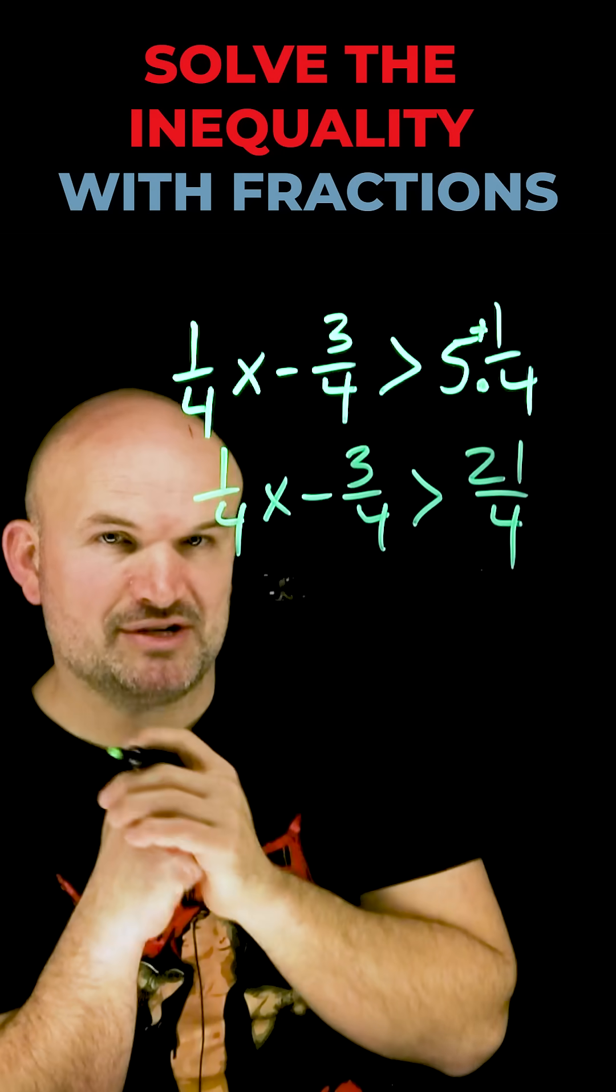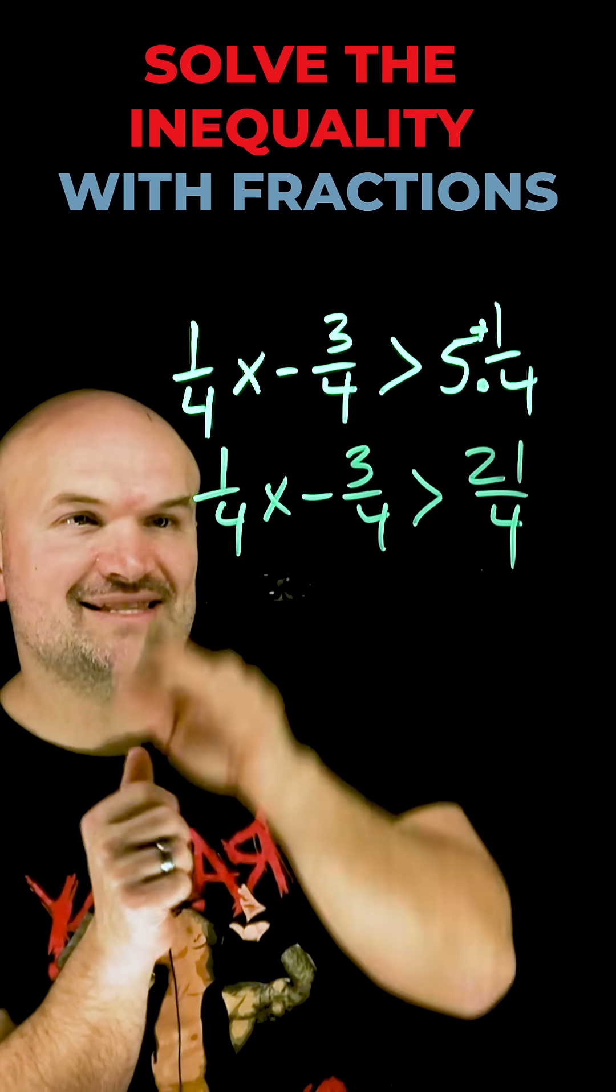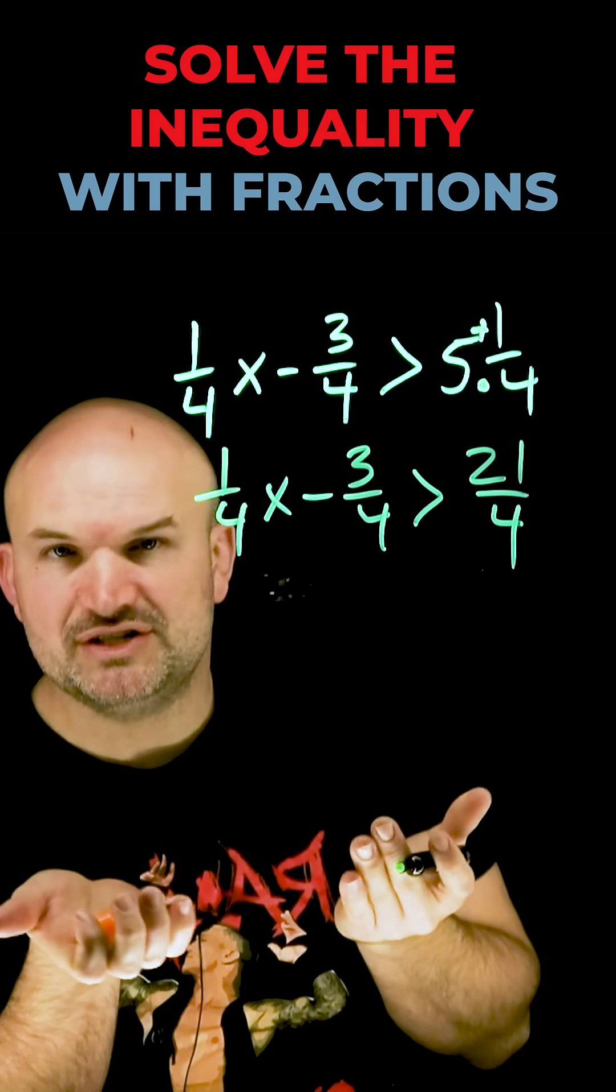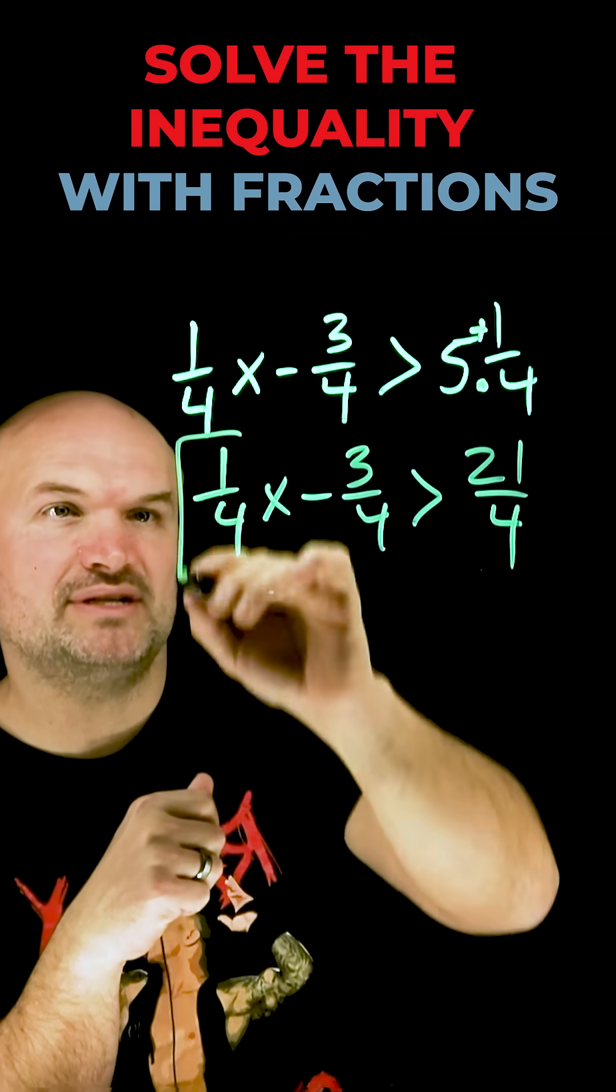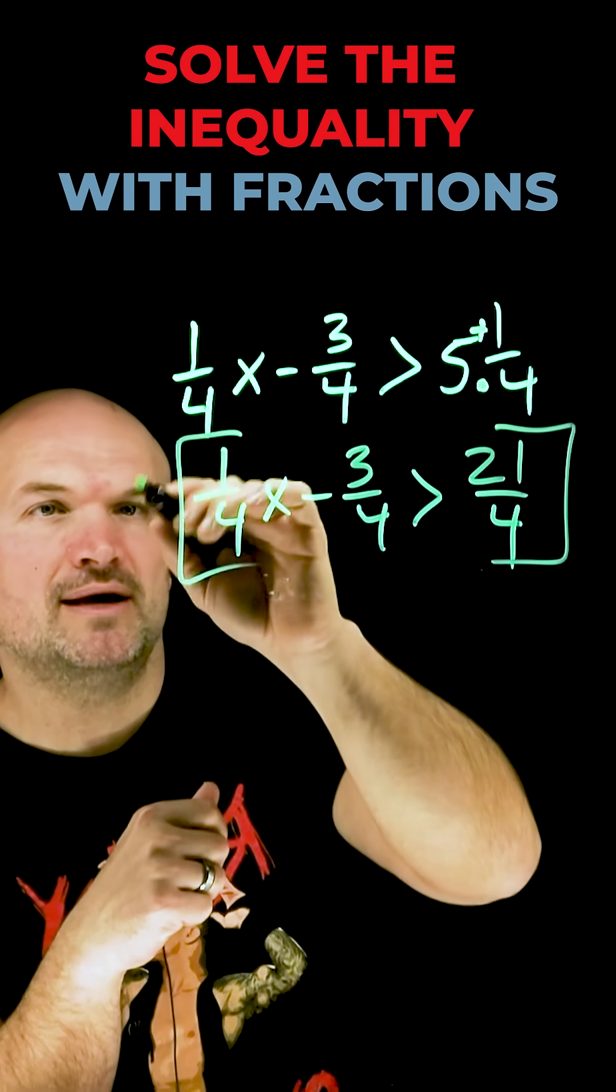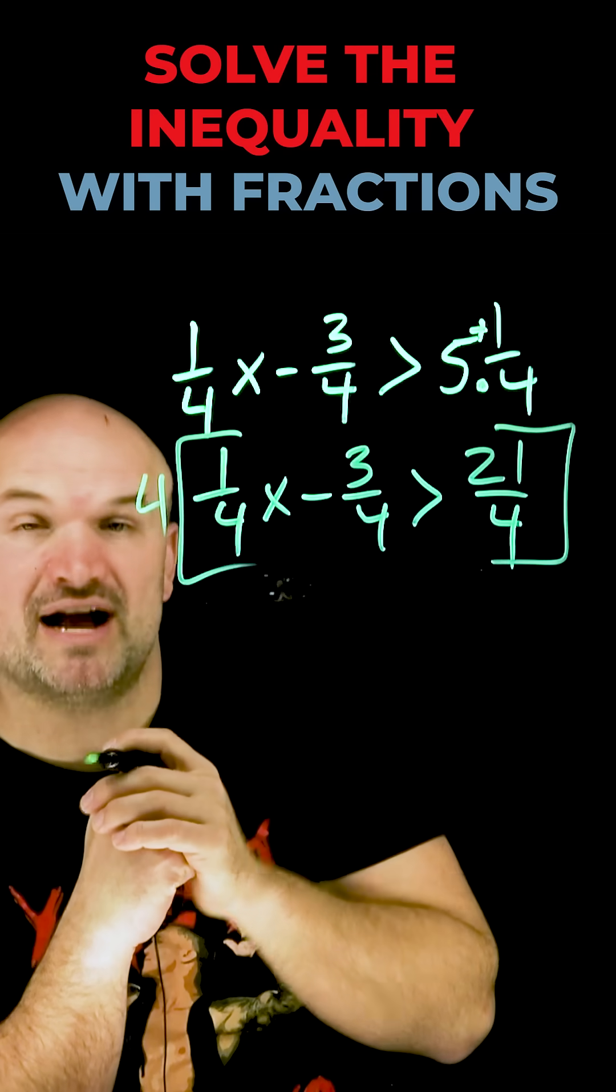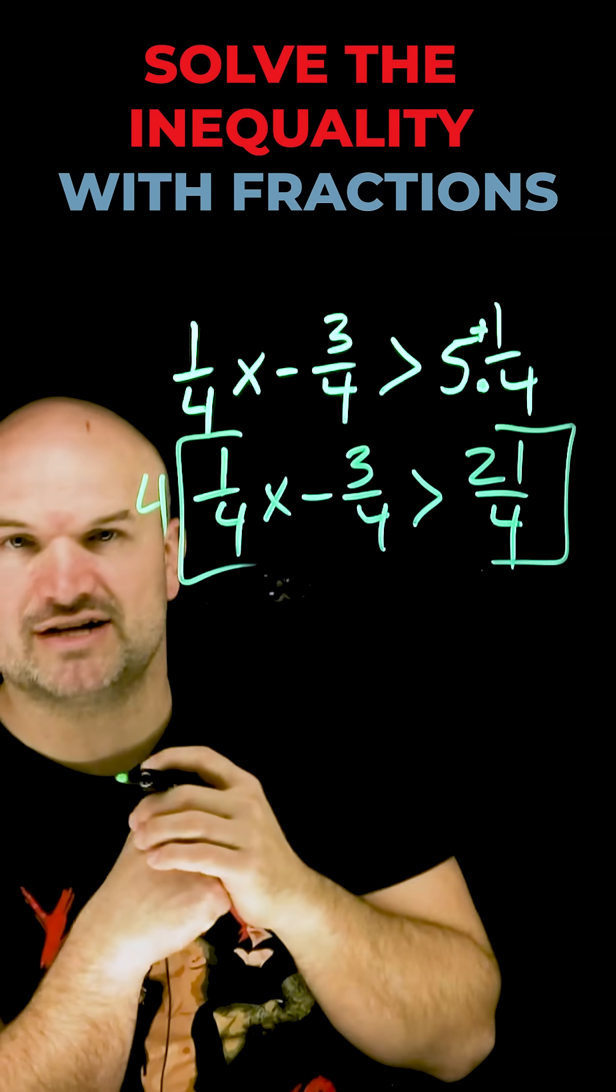Now you can see I have a two-step equation. The nice thing here is that all of my terms are being divided by 4. If I want to undo each term being divided by 4, I simply need to multiply my inequality by 4. This will get rid of my fractions for each of these terms, but it's not going to change the solution.